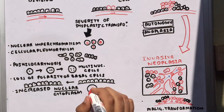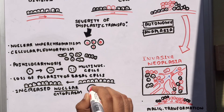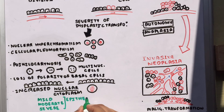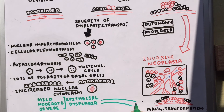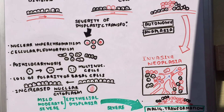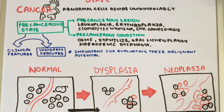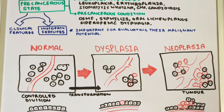Epithelial dysplasia may be divided into three categories: mild, moderate, and severe. Severe dysplasia in a lesion means it has a greater chance of undergoing malignant transformation. This was all about the introduction to the precancerous state.